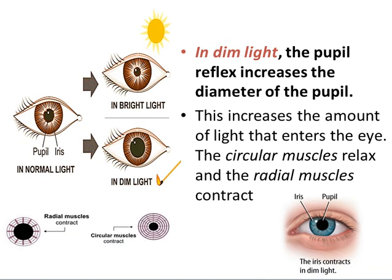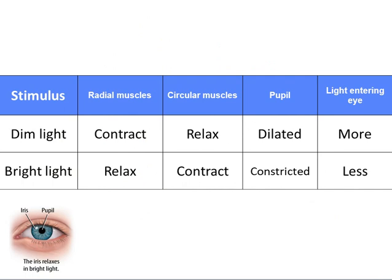In dim light, the photoreceptors detect the change in the environment — darkness. The radial muscles contract and, as a result, the circular muscles relax. The pupil dilates and its diameter widens, allowing more light to enter the eye. To summarize: in dim light, radial muscles contract and circular muscles relax — the pupil dilates and more light enters. In bright light, radial muscles relax and circular muscles contract — the pupil constricts and less light enters the eye.